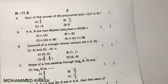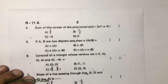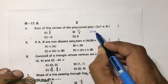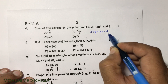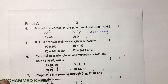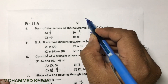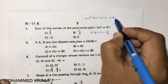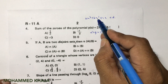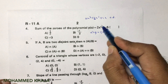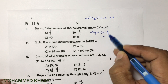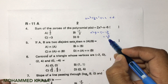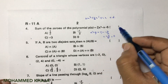Fourth question: sum of the zeros of a cubic polynomial. Alpha plus beta plus gamma equals minus b by a. Comparing with the standard cubic equation ax³ + bx² + cx + d, here b is the coefficient of x², but we do not have x² in this polynomial, so b equals 0. Therefore minus 0 by a (where a equals 2) gives 0. The correct option is D.